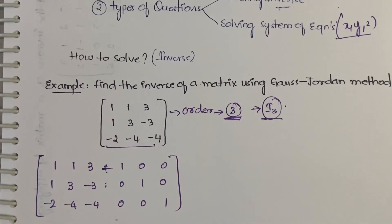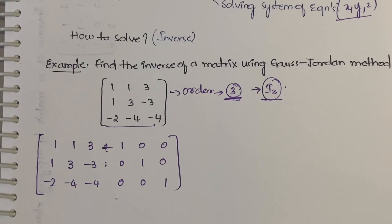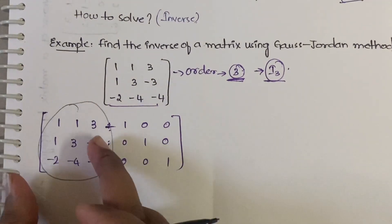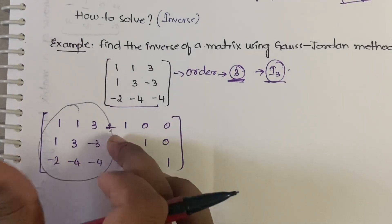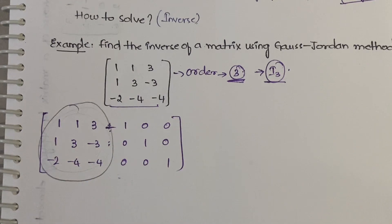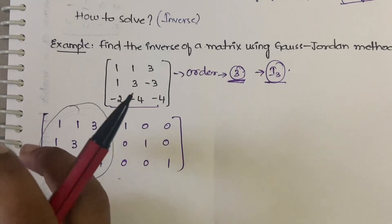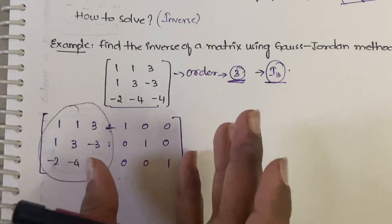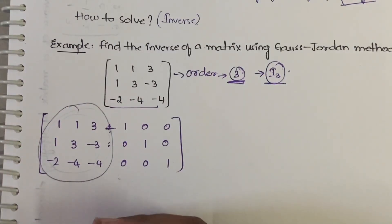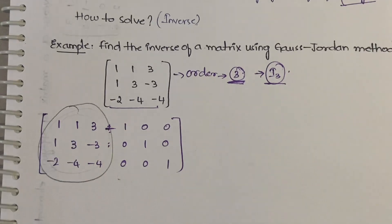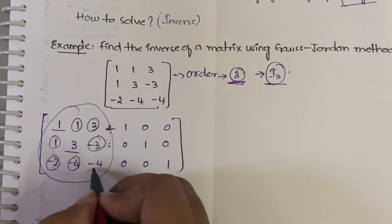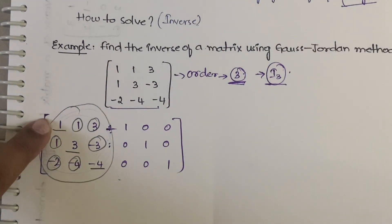Beside the original matrix, write the 3×3 identity matrix: 1 0 0 / 0 1 0 / 0 0 1, separated by a dashed line. What we need to do is make the left-side matrix into an identity matrix by applying row operations. The same row operations must also be applied to the identity matrix on the right. Once done, the resulting right-side matrix will be A inverse.